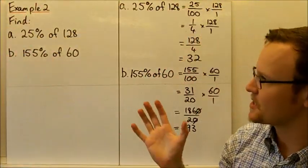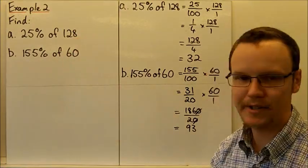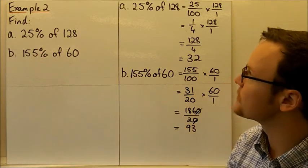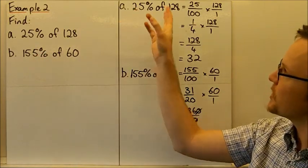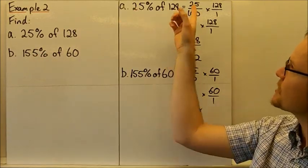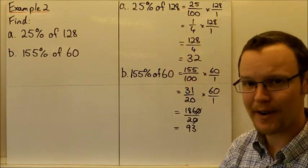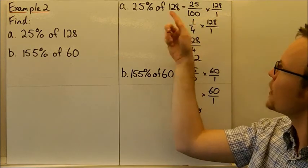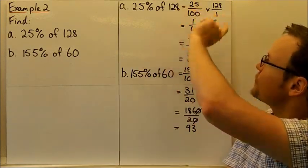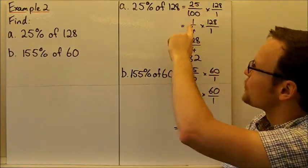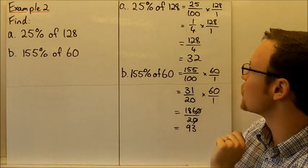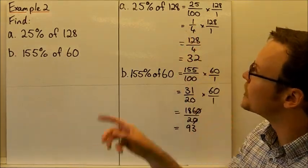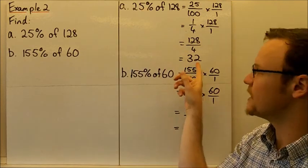So last example, finding some percentages of values. So finding 25% of 128 and 155% of 60. So 25% of 128, we can convert the 25% to a fraction. So it's 25 out of 100 multiplied by 128 over 1. So 25 over 100, that can simplify to 1 quarter. And that means we've got 128 divided by 4, which is 32. So 25% of 128 is 32.